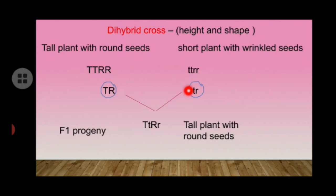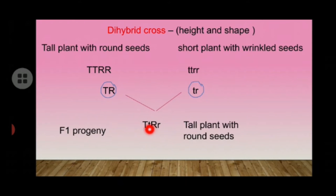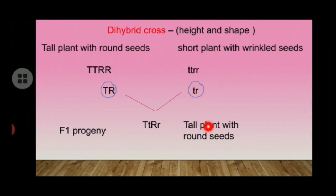When both the gametes fuse, we get the F1 progeny. The genotype of the F1 progeny is TtRr (capital T, small t, capital R, small r). That is, the F1 plant is a tall plant with round seeds.